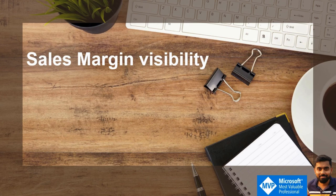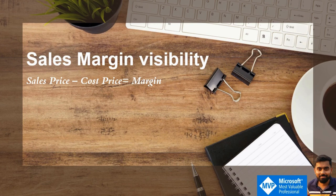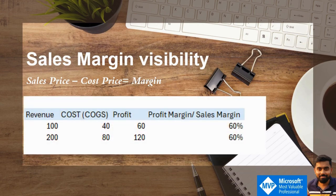So what is sales margin? I think we are all aware of this concept. Sales margin is basically sales price minus cost price, and whatever amount is left is the margin. The sales price is the price we sell to the end customer, and the cost price is what it costs to produce the goods or sell a service. Sales price minus cost price is our profit or margin.